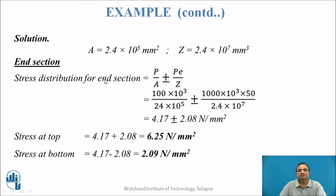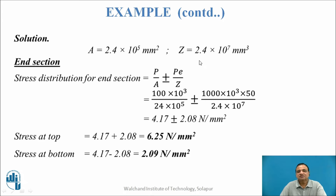Solution: Area = B × D = 2.4 × 10⁵ mm². Modulus of section Z = BD²/6 for a rectangular section = 2.4 × 10⁷ mm³.